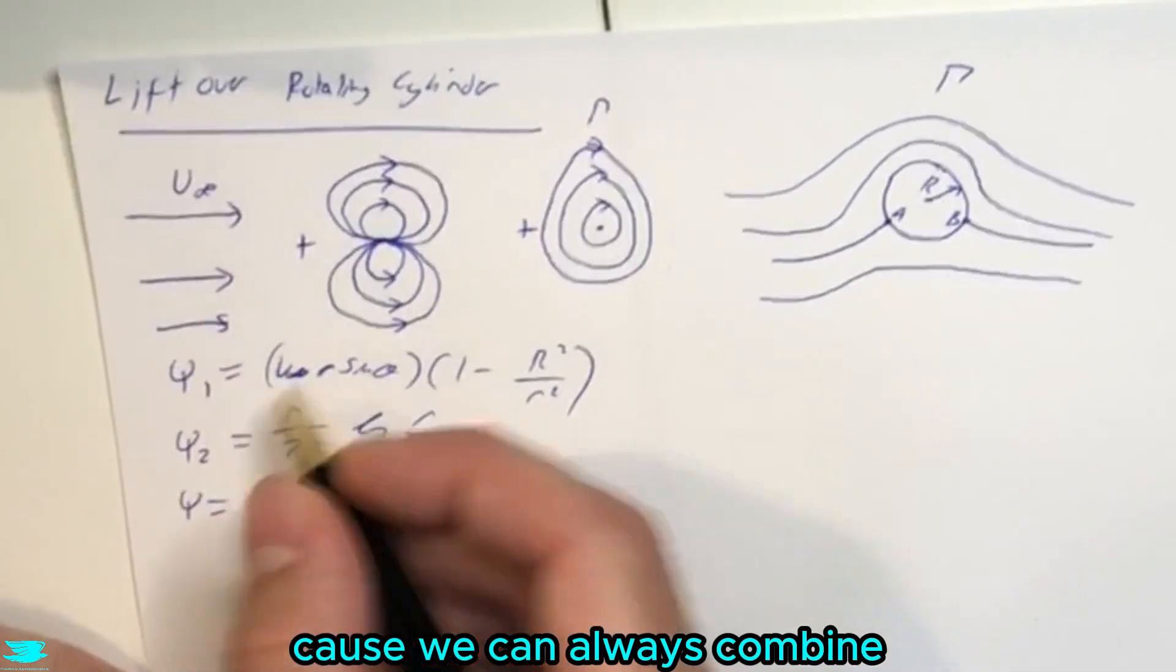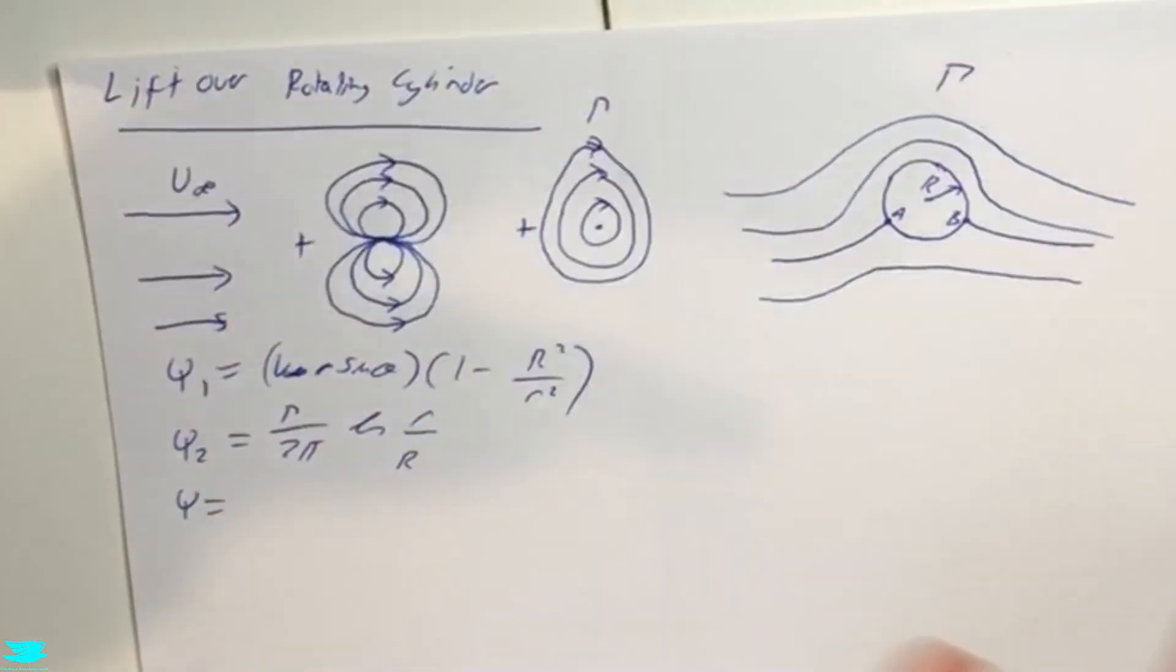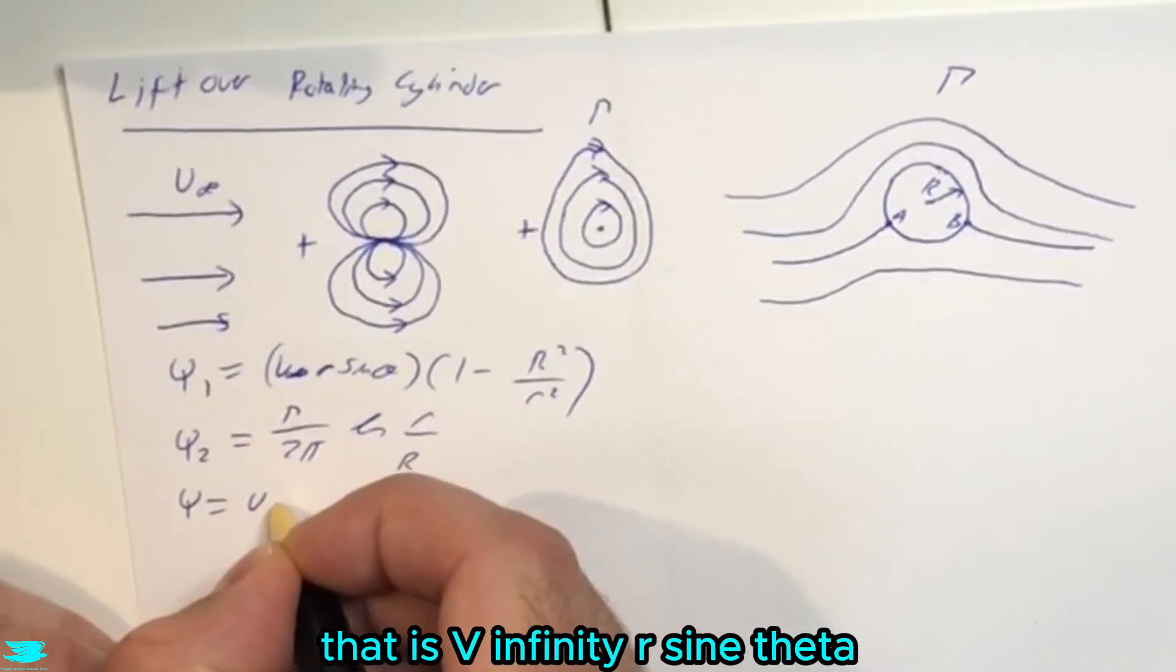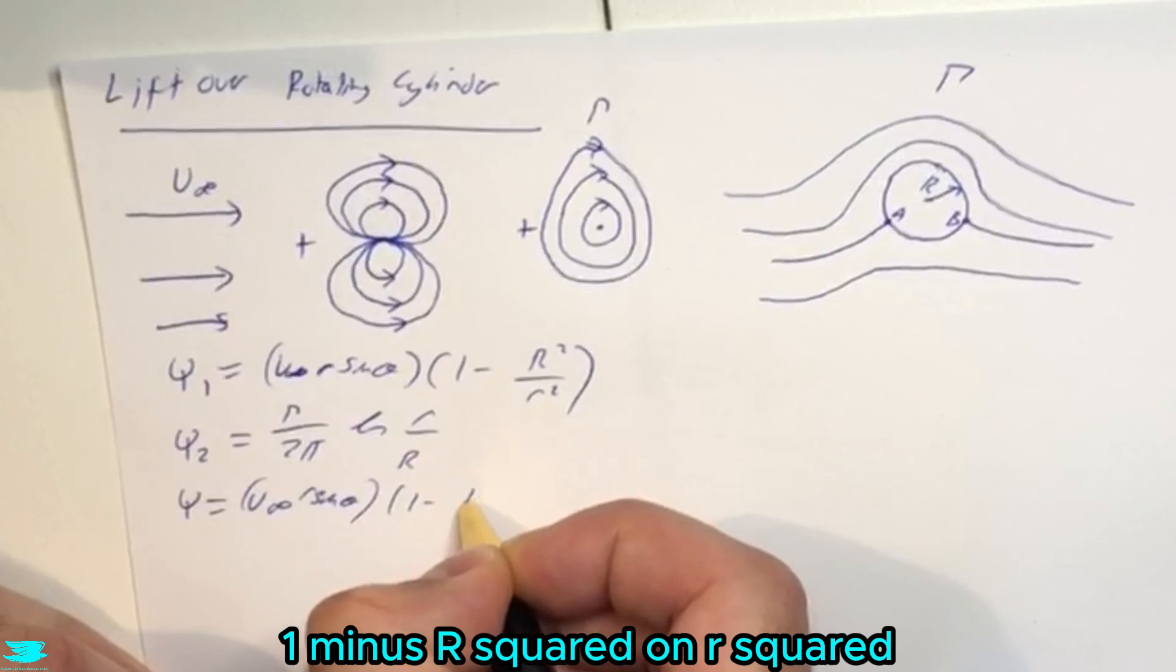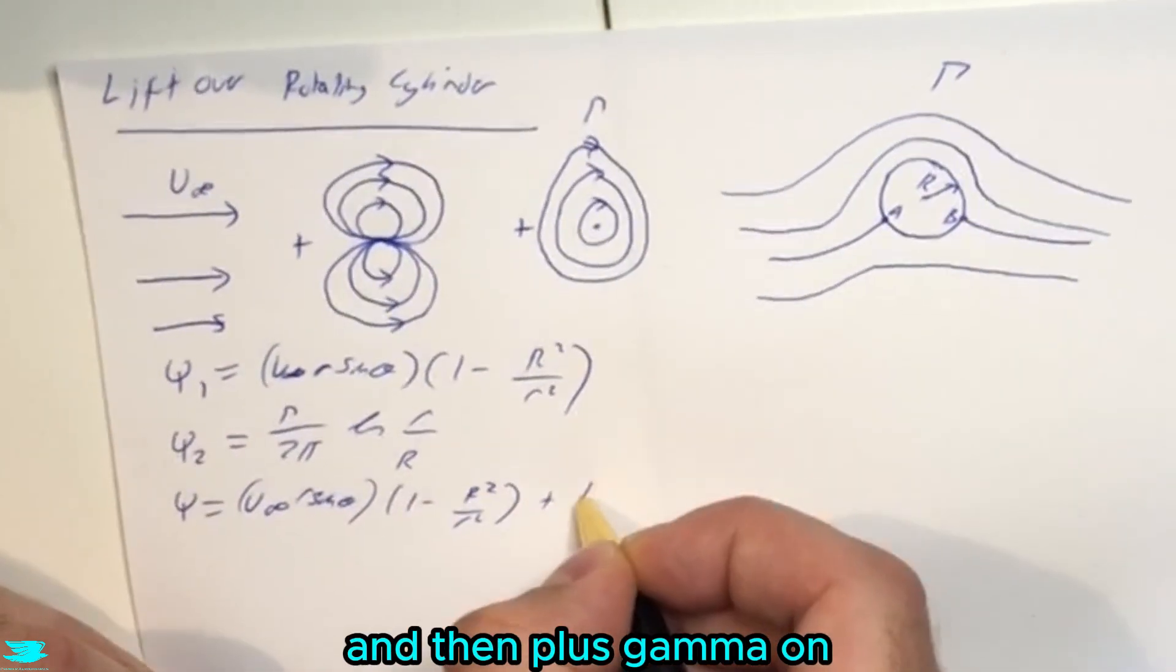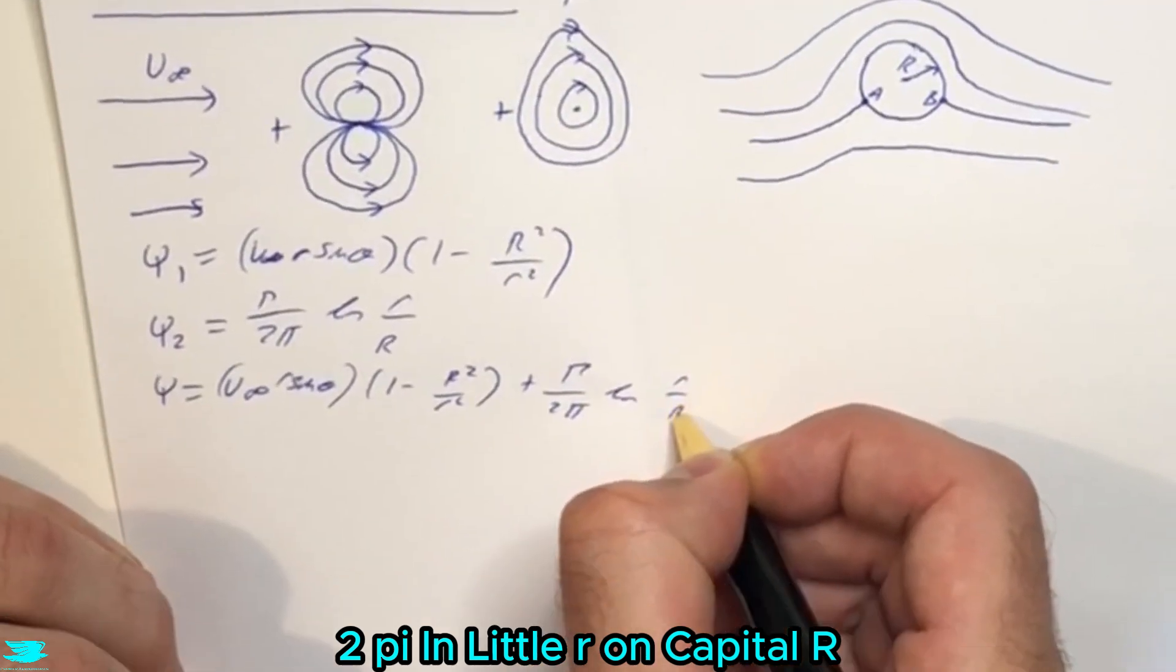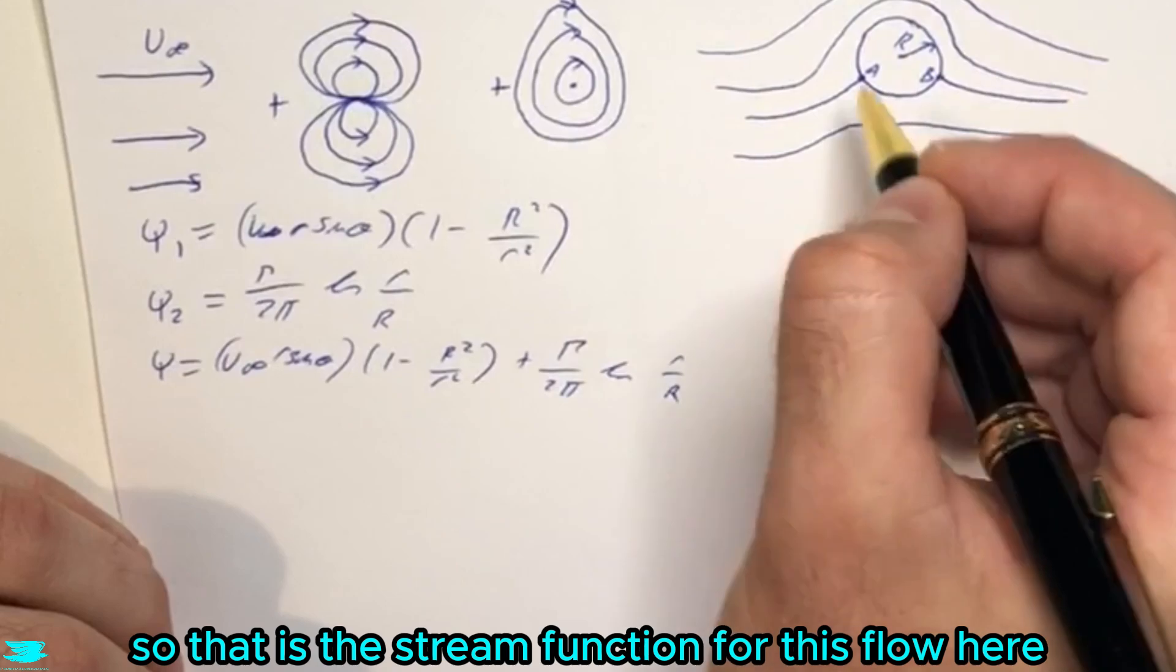So combining these two, which is great, because we can always combine two different stream functions to get a third stream function, which is the combination of all stream functions that we have. So Psi equals this one plus this one.